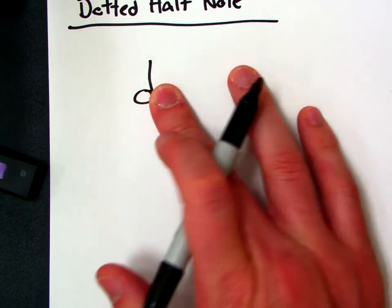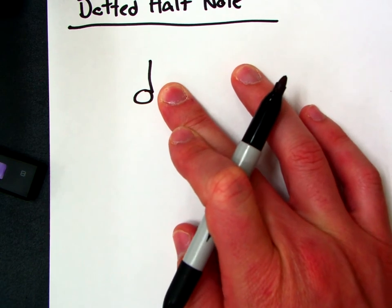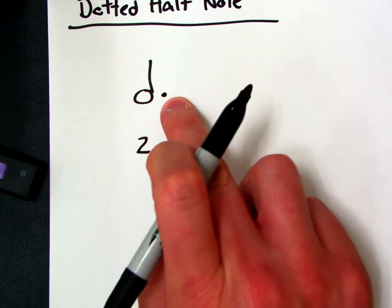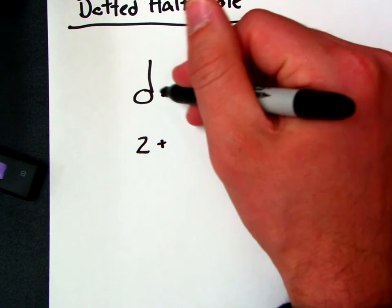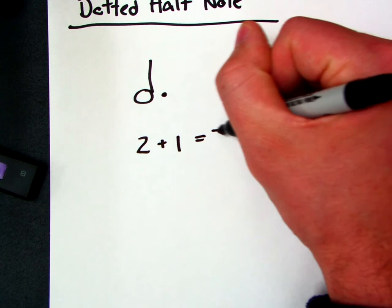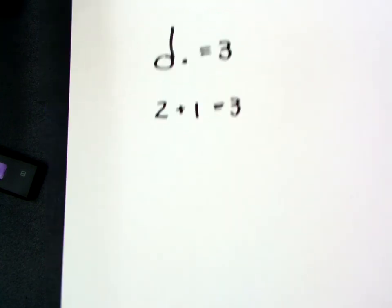Now what we do, if we first cover up the dots, we would say how many beats is a half note worth? Two. Right? Now this dot is worth half of whatever this value is. So two plus half of, or half of two is one. So two plus one equals three. That means a dotted half note equals three beats.